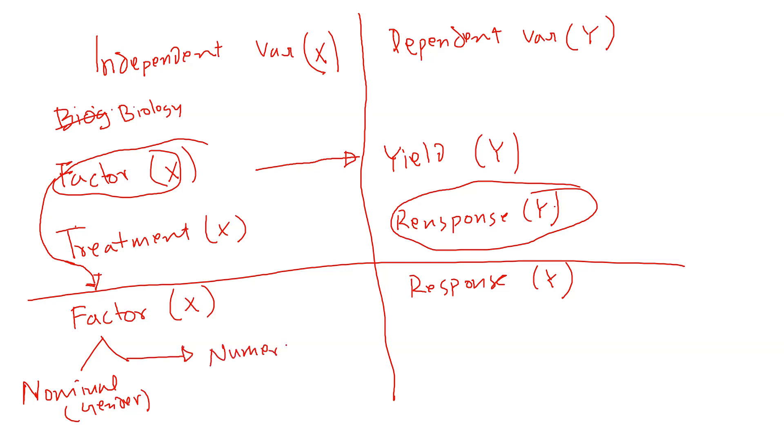Or you could have a numeric variable, which is, for example, RPM or speed. You want to see does the speed affect the gas mileage of some car. So then mile per gallon would be the response. So factor could be both numeric and non-numeric or nominal.